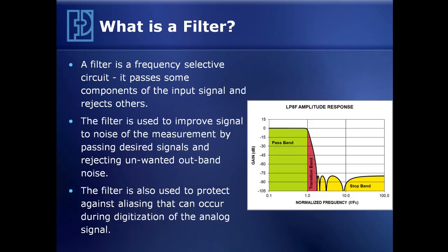The first thing we'd like to start out with is to answer the question: what in fact is a filter? A filter is any frequency selective circuit that passes some components of the input signal and rejects others. The filter is often used to improve signal quality by boosting the signal energy and rejecting the unwanted part, or what we call the noise in the signal. The filter is also used to protect against a phenomenon called aliasing, where two signals can have identical samples.